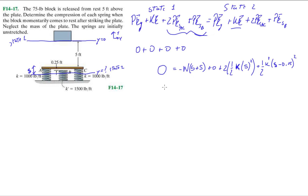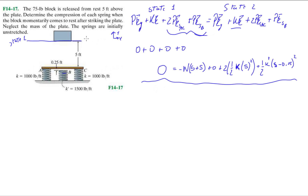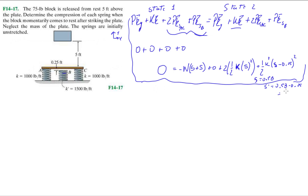So what I want you to do is think of a different way to do this. Let's say I'm a rookie — this is my sophomore year and I'm just tackling the problem the way I think I should. If you're satisfied with the book's way, go ahead and wrap up. You should end up with s equals 0.58 feet roughly, and then for the other spring s-prime equals 0.58 minus 0.25, which is 0.33 feet.